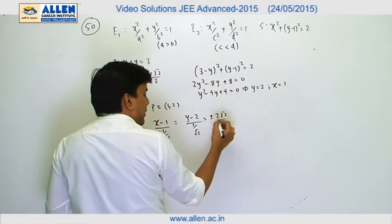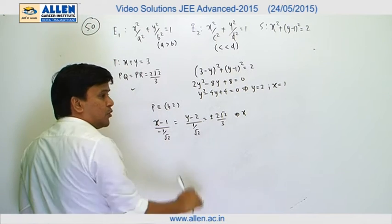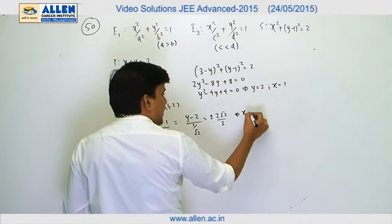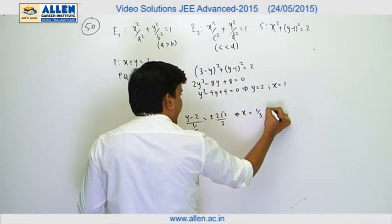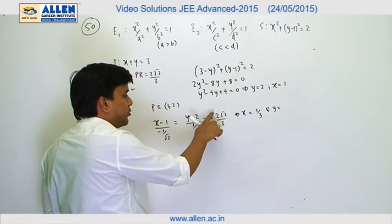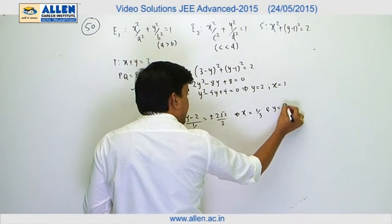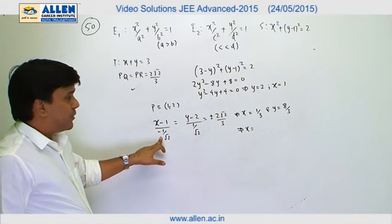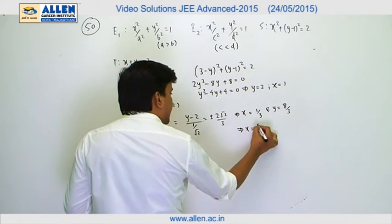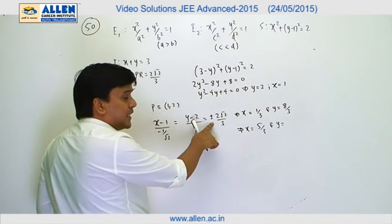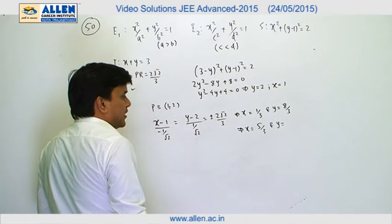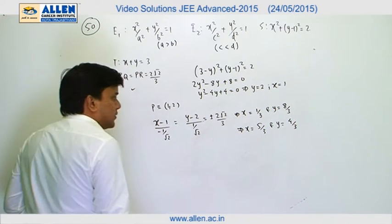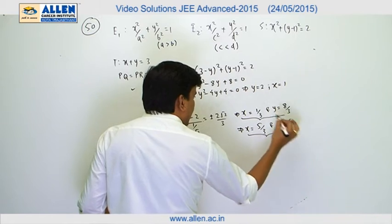Picking the plus sign: x equals (minus 1/root 2)(2/3) + 1 = 1 minus 2/3 = 1/3, and y equals (1/root 2)(2/3) + 2 = 2/3 + 2 = 8/3. Picking the minus sign: x equals 2/3 + 1 = 5/3, and y equals minus 2/3 + 2 = 4/3. So the points Q and R are (1/3, 8/3) and (5/3, 4/3).